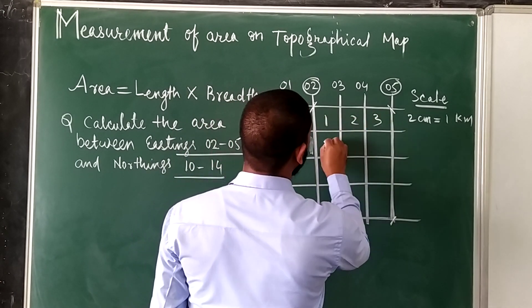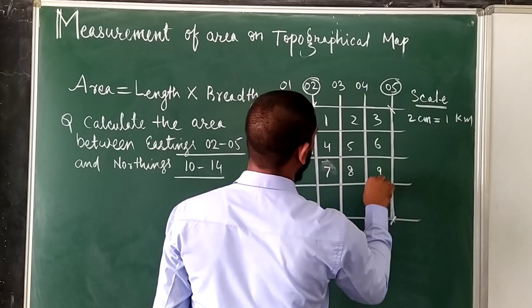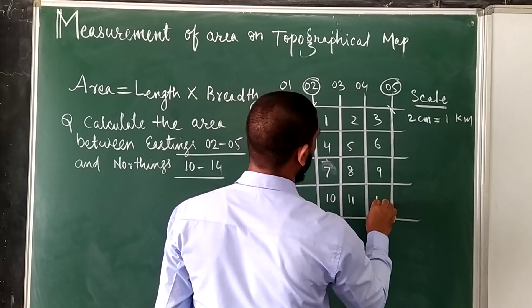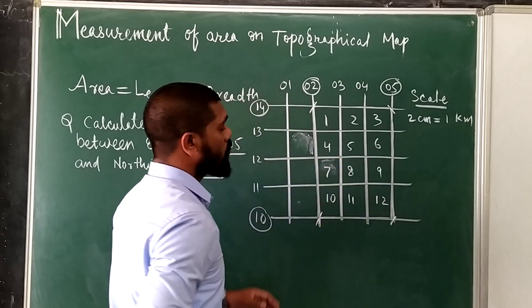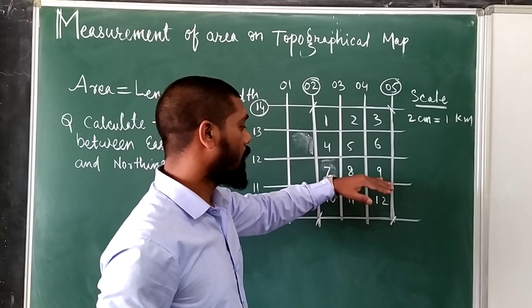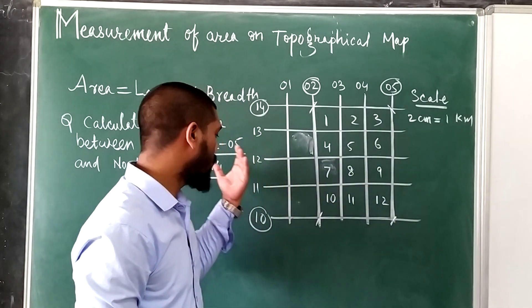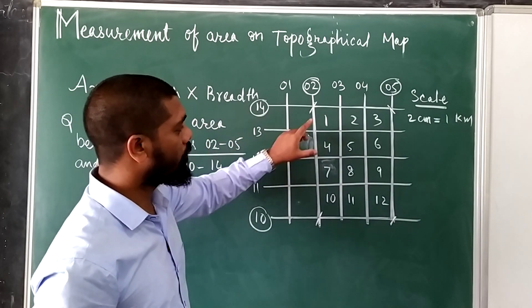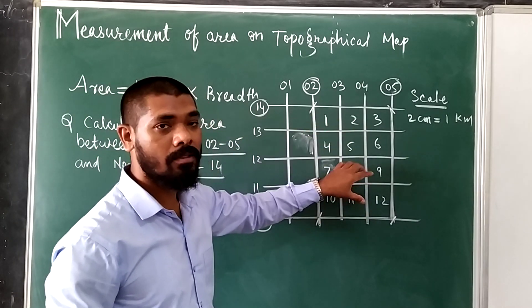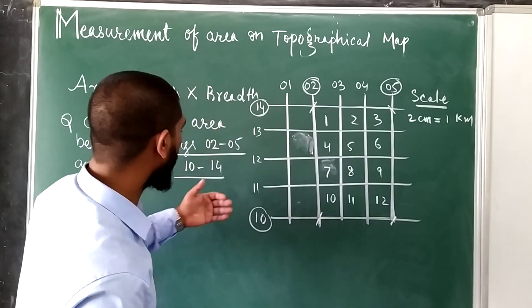1, 2, 3, 4, 5, 6, 7, 8, 9, 10, 11, 12. So 12 grids are there, so the answer will be 12 square kilometers. Directly we can write without solving the question; when you count the grids we can write 12 square kilometers, but there are other ways.